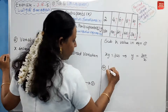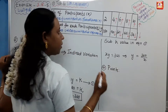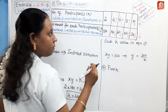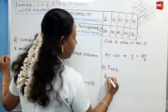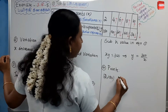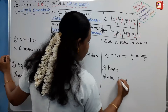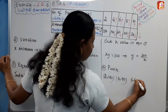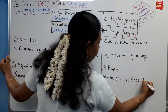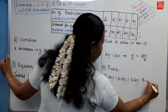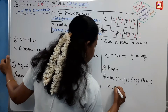Next, we list the points for the graph. The coordinate points are: (2, 180), (4, 90), (6, 60), (8, 45), and (10, 36).